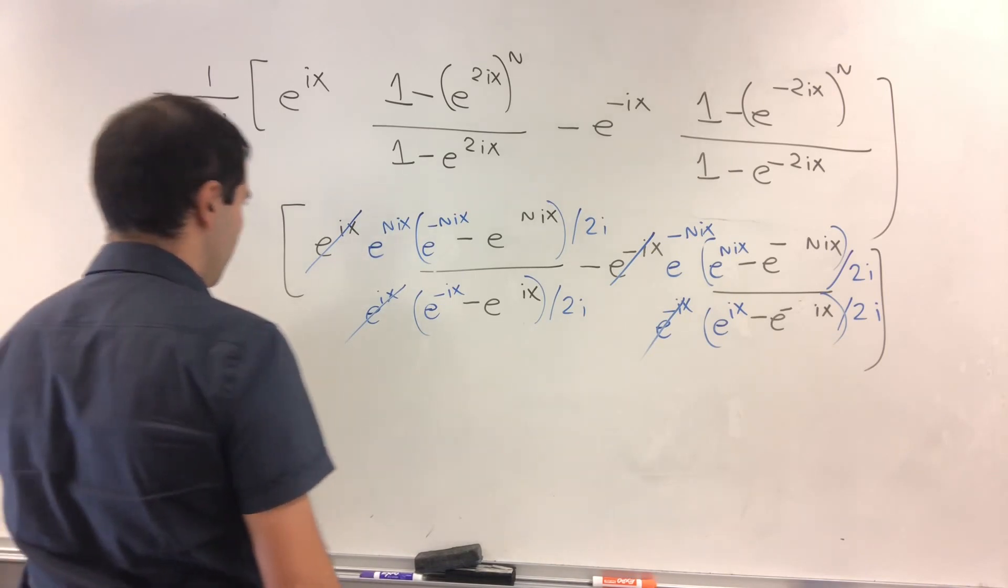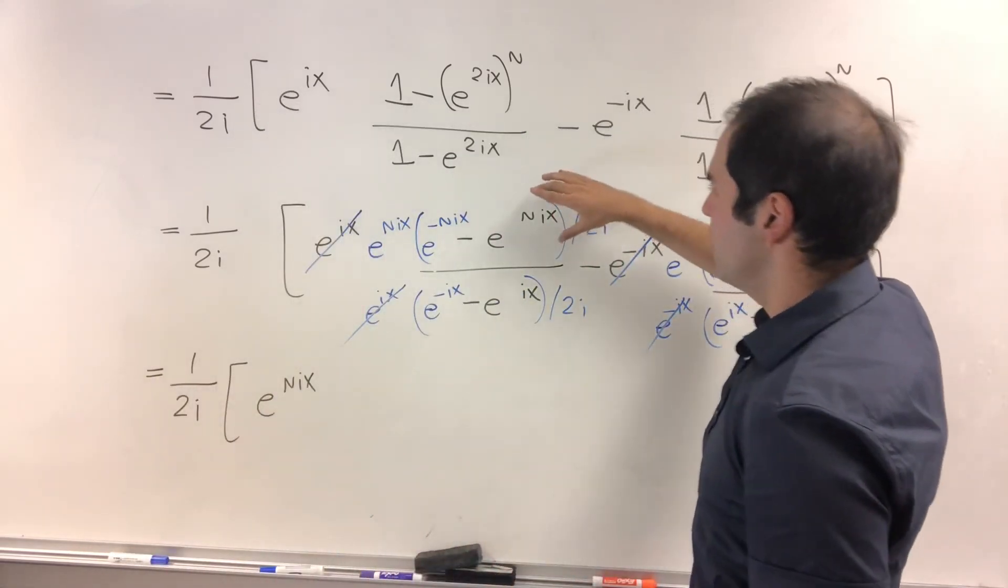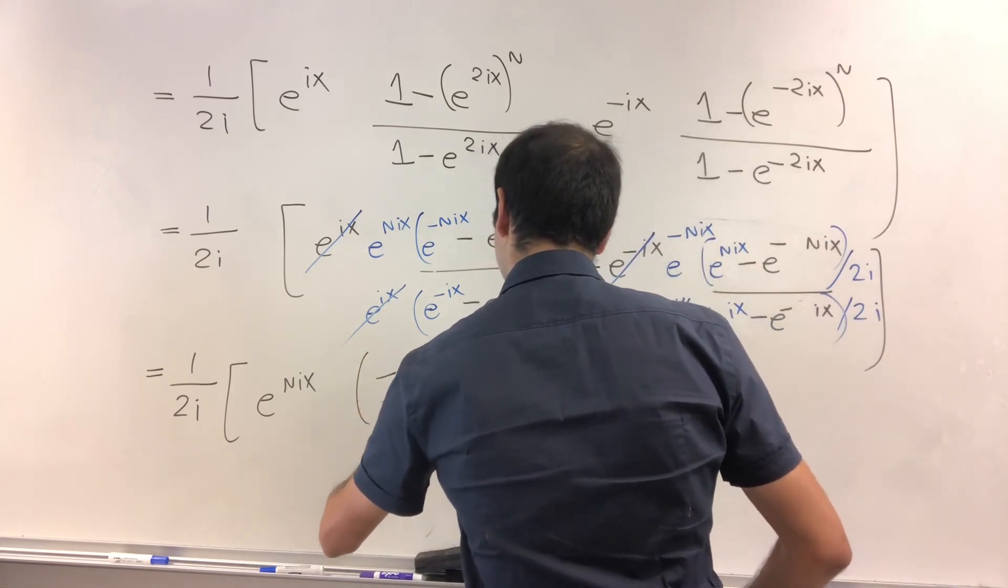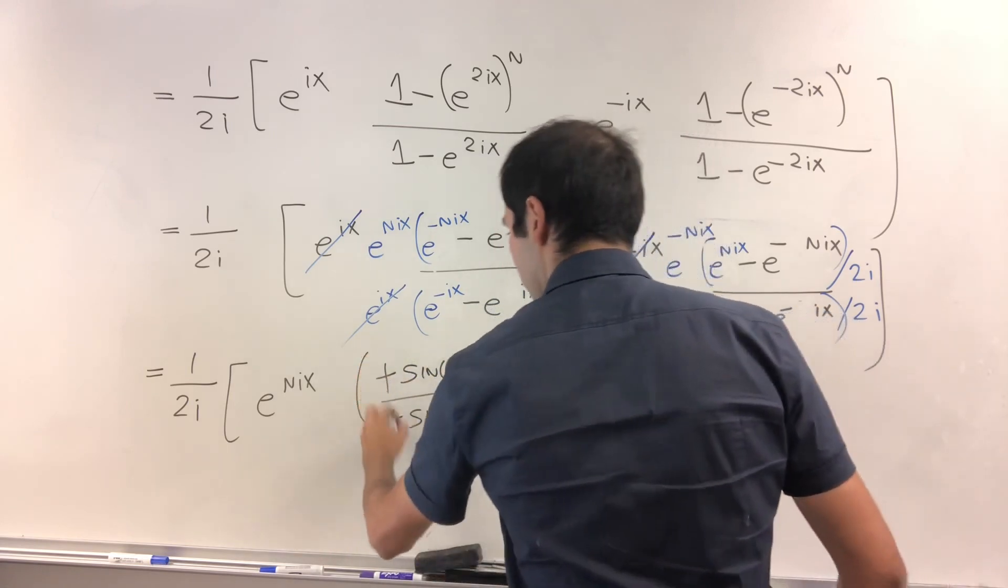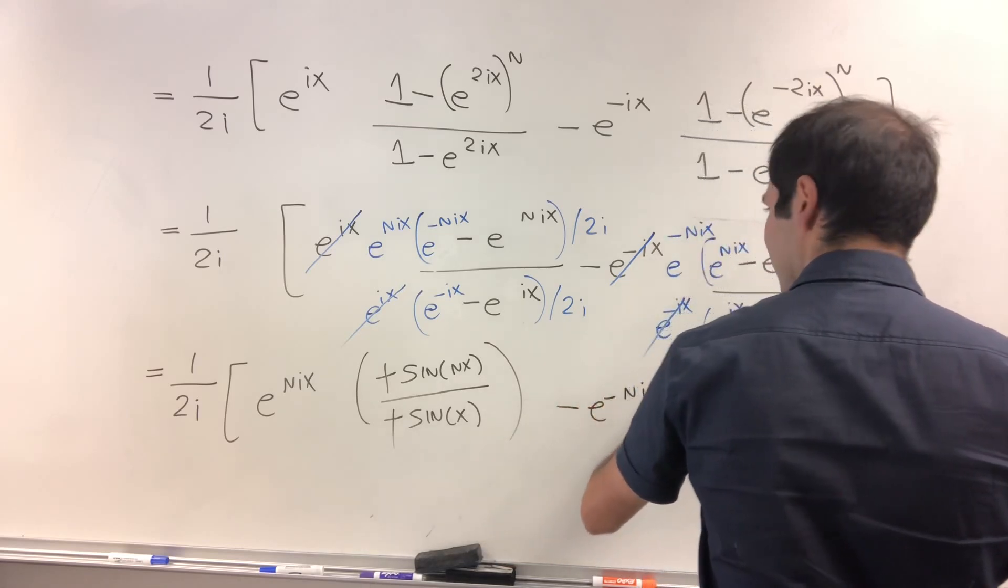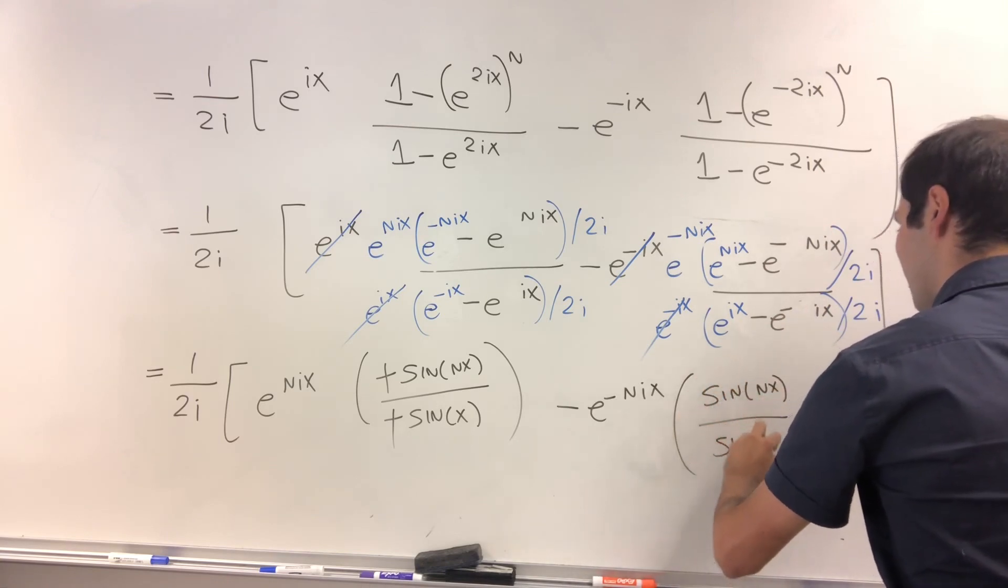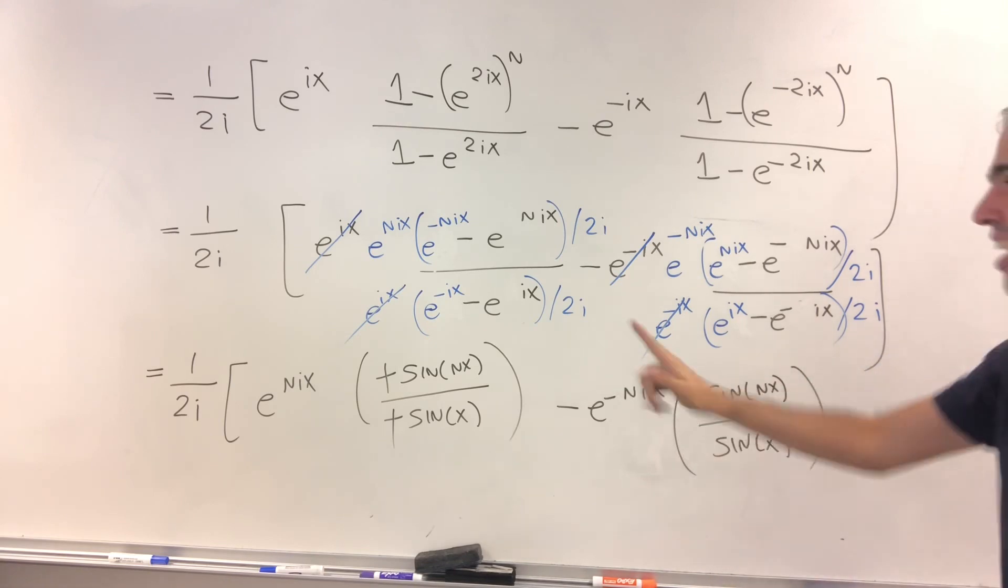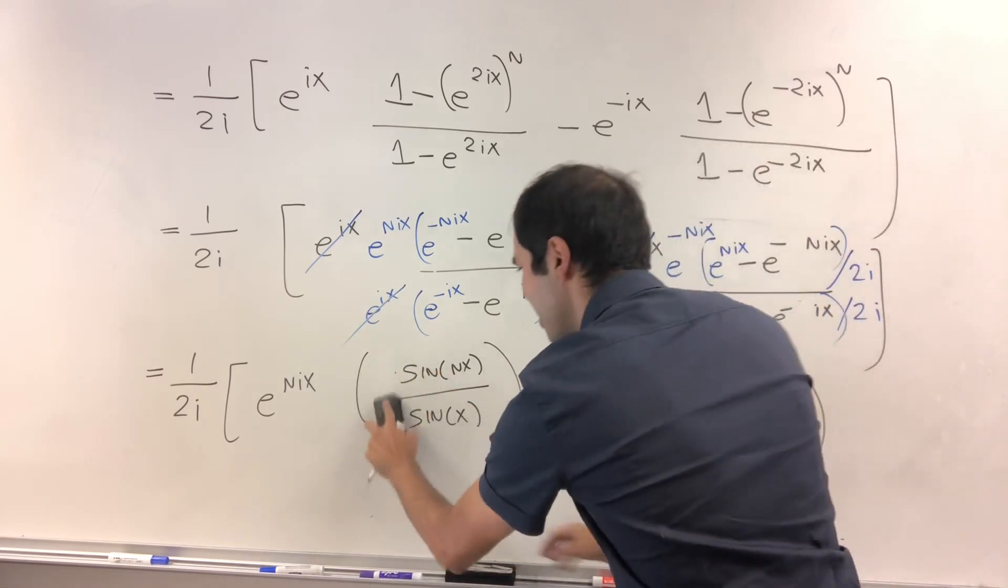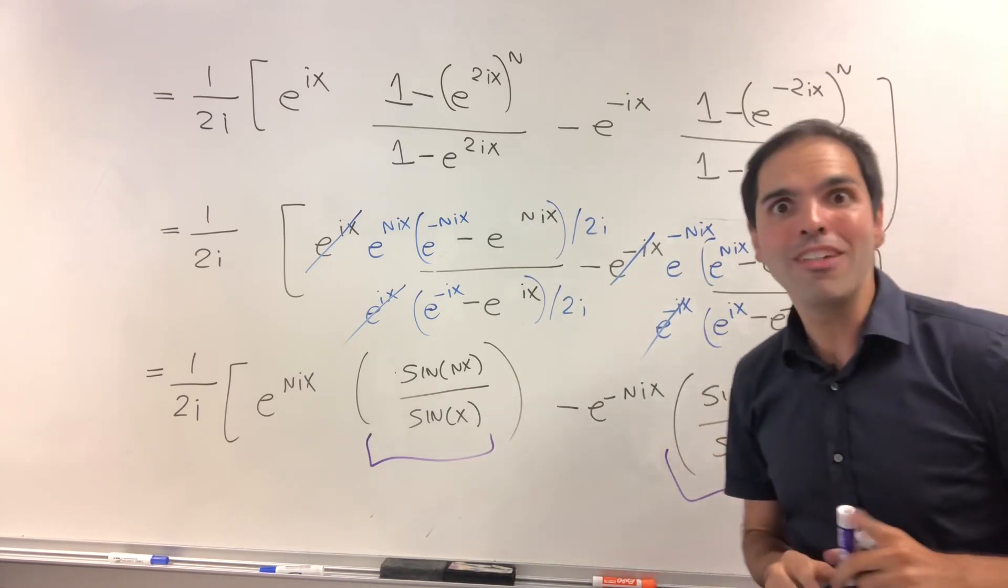Then what are we left with? So, 1 over 2i, e to the n ix, all right, this is none other than minus sine of nx. This is also minus sine of x, which again, in this case then just becomes plus. And then minus e to the minus n ix. And in this case, even easier, sine of nx over sine of x.